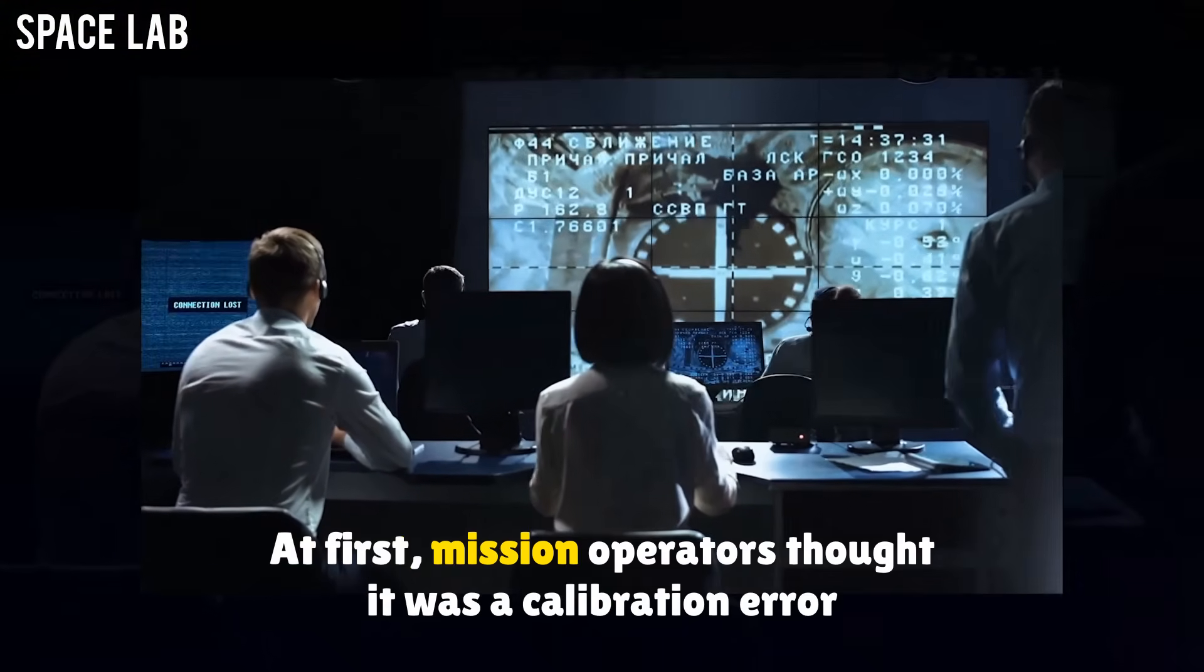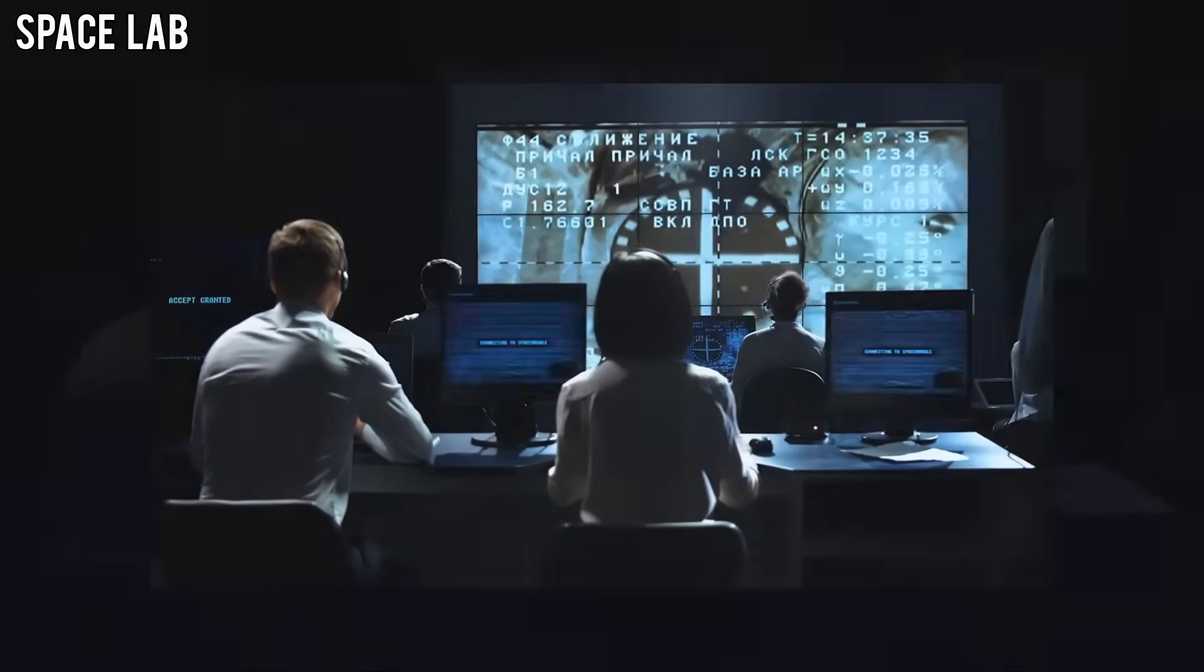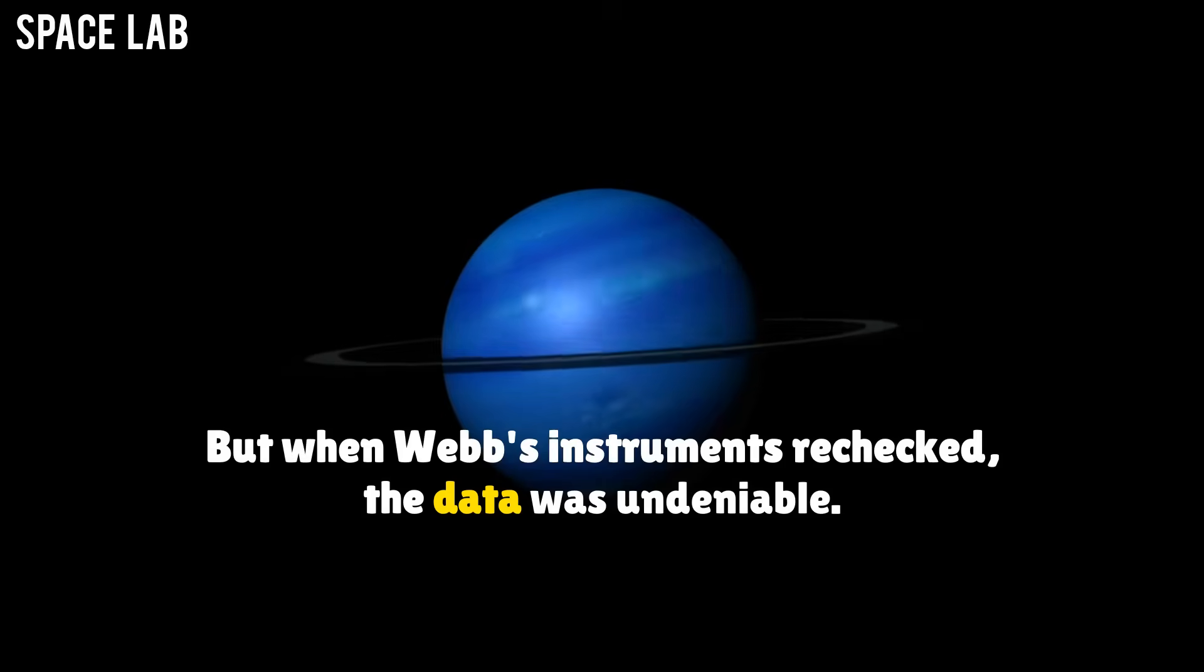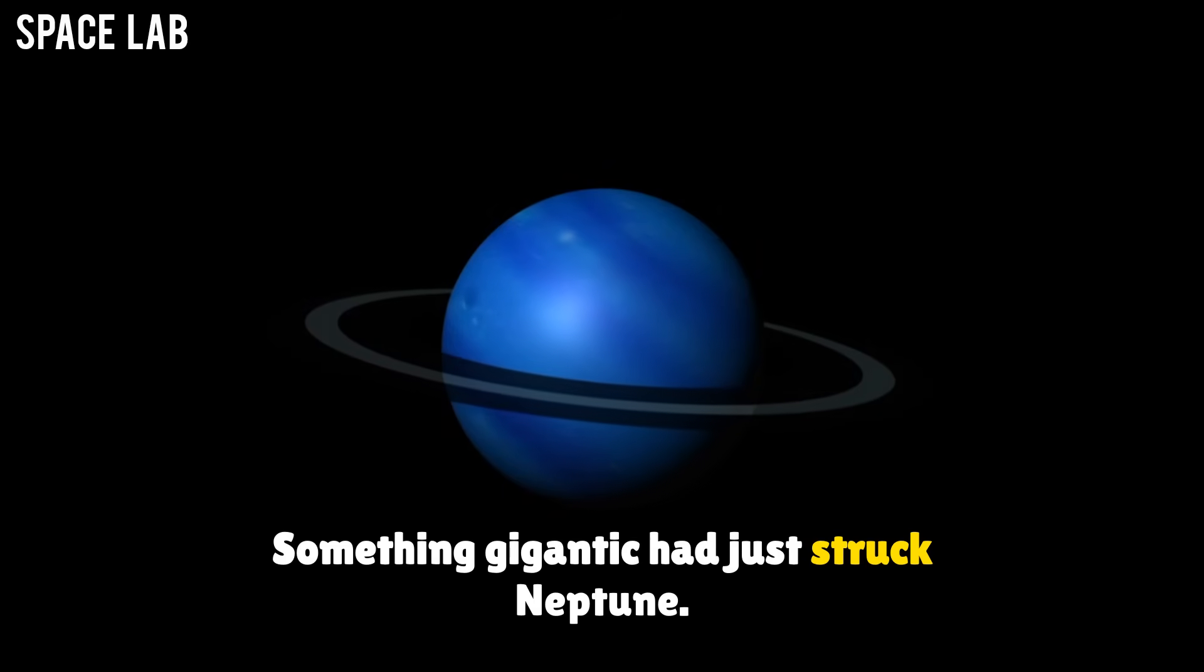At first, mission operators thought it was a calibration error or cosmic ray interference. But when Webb's instruments rechecked, the data was undeniable. Something gigantic had just struck Neptune.